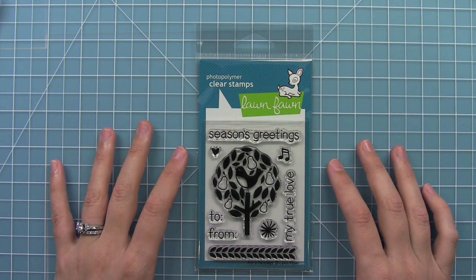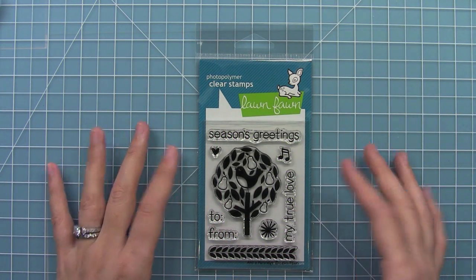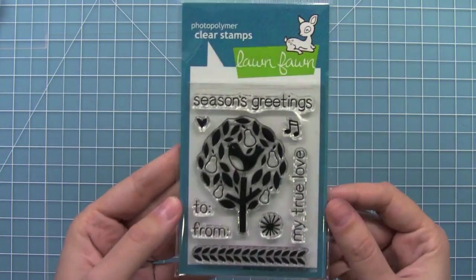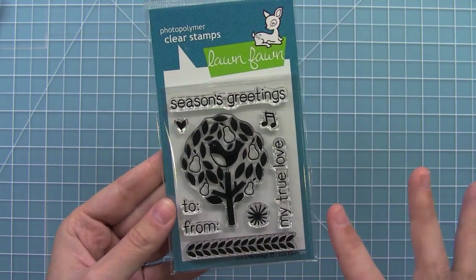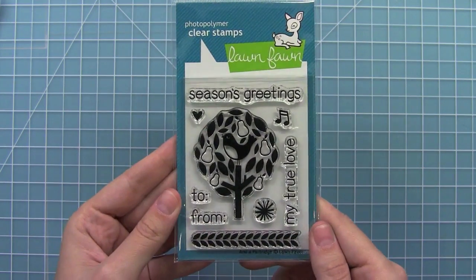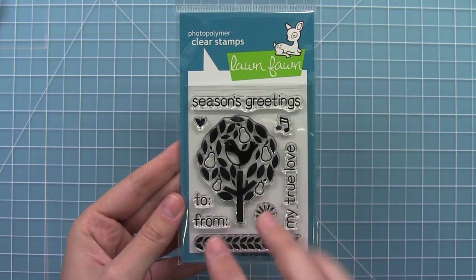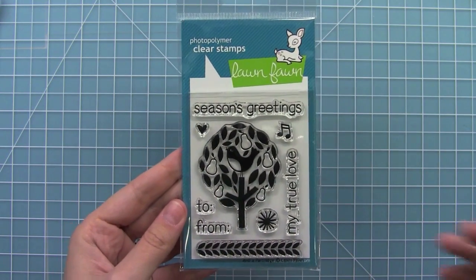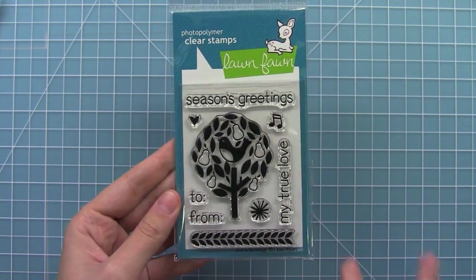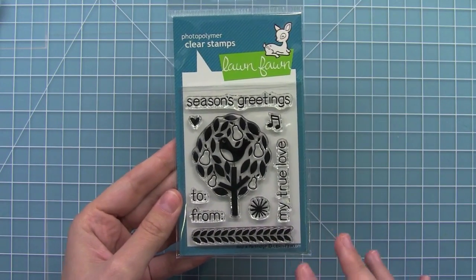Hello and welcome to another Lawn Clippings video by Lawn Fawn. Today we are introducing our set and a partridge. I just love this fun set. It's one of our medium sized sets and it's got lots of cool stuff that's great for tags and holiday cards and also year round too. So let's go ahead and start stamping some of it out.